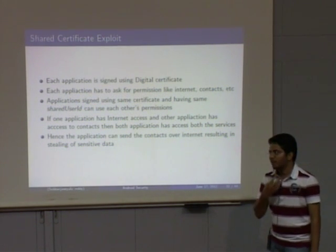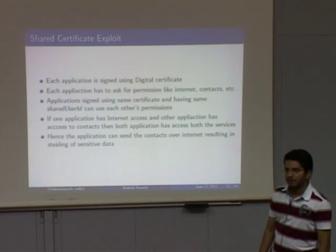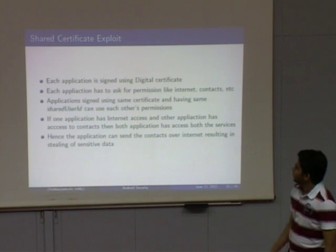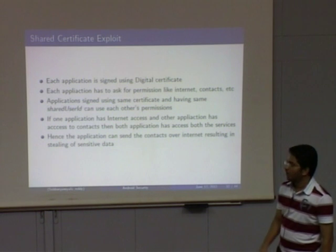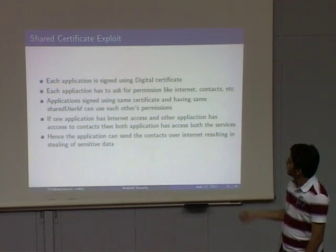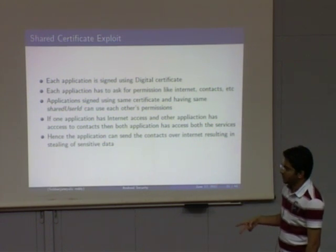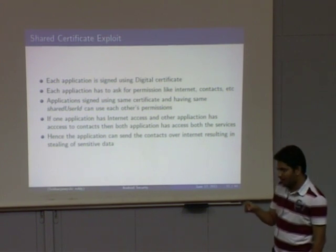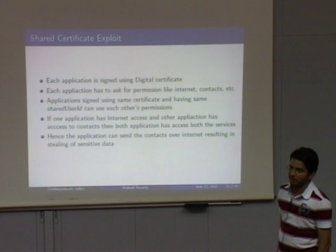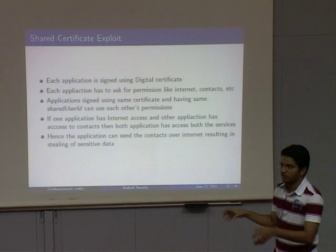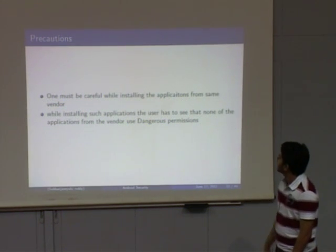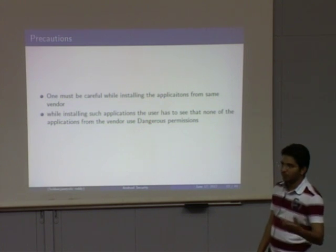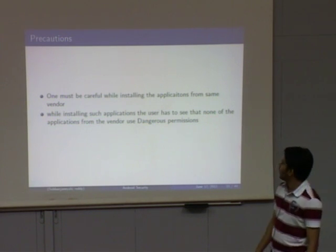Shared certificate exploit: two applications from the same vendor, with the same digital certificate — using the shared user ID feature, they can share permissions. For example, one application has internet access and another can access contacts. When both are installed with shared user ID, one application can read contacts and the other can send them over the internet — the combined permissions become a superset of both individual applications. One should be careful when installing multiple applications from the same vendor, especially if any have dangerous permissions.